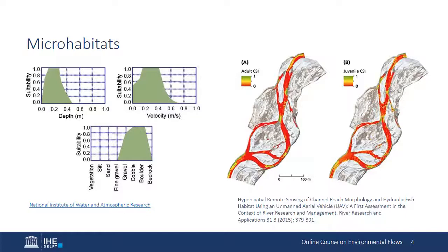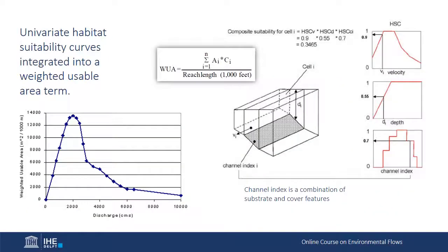Suitability is expressed on a scale of 0 to 1, with 1 representing the highest level of suitability. These relationships can also be expressed in two dimensions, as shown in the figure on the right. The different variables representing habitat suitability can be combined to derive composite suitability indices, where the influence of different variables is given different weights. The area of suitable habitat can then be compared to the total area of the stream or river reach to calculate the weighted usable area versus discharge, as shown in the figure on the left. This figure expresses the weighted usable area versus discharge for a single species at a specific point in its life stage.